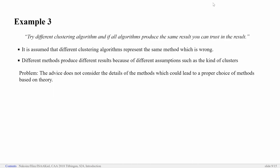Here the problem is obviously that critique does not consider the purpose of research. The third example: try different clustering algorithms and if all agree, you can trust in the result. Obviously this is wrong because different clustering algorithms do not represent the same method. They assume different kinds of clusters and hence each clustering algorithm is just useful in a certain range of applications. So we have to consider the details of methods also.